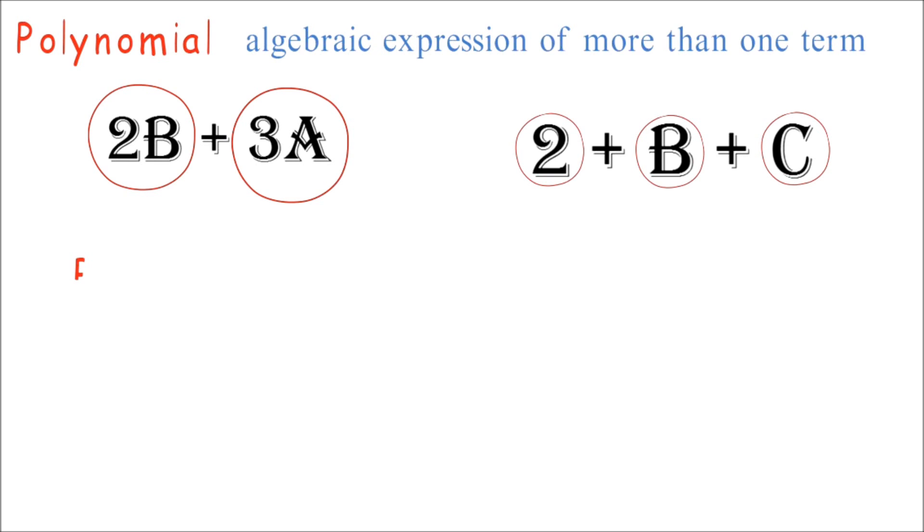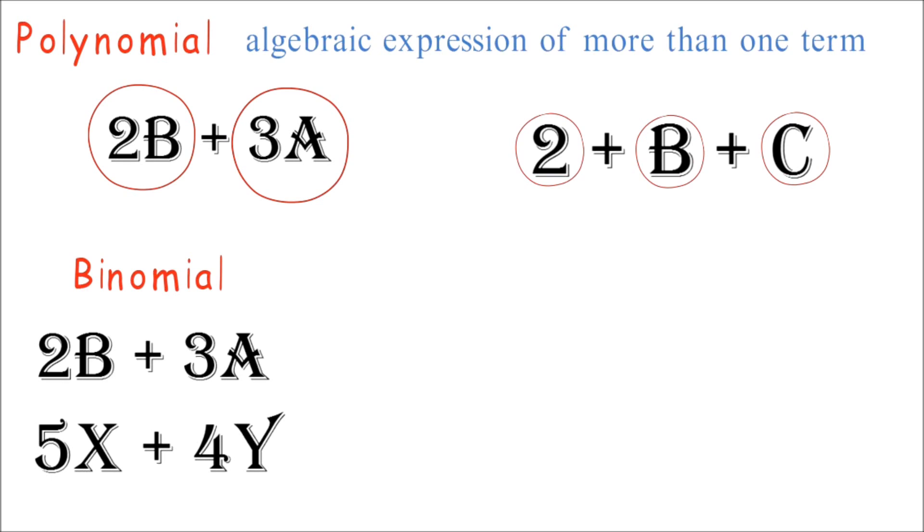A polynomial of two terms is a binomial. Example, for 2b plus 3a, we have exactly two terms, therefore it is a binomial. Also, 5x plus 4y is a binomial because it has two terms.